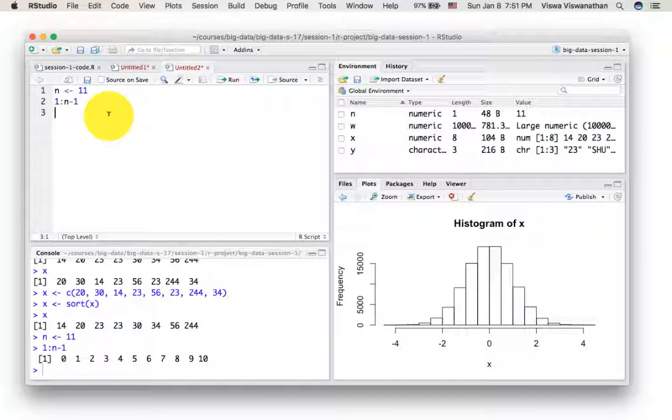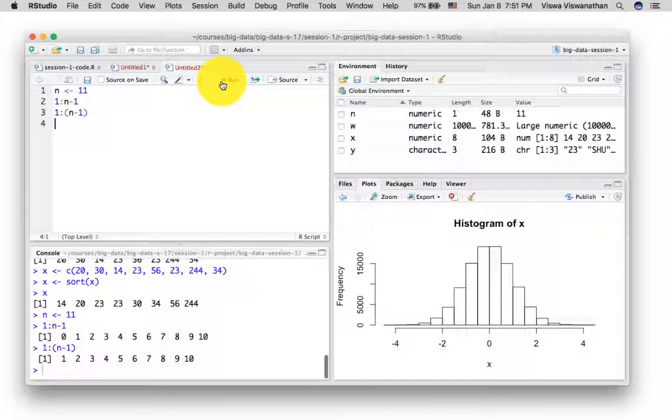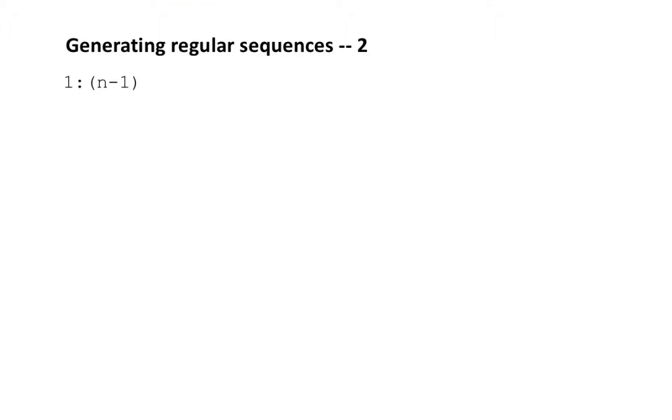So the way to achieve that is 1:(n-1). Because we want the minus 1 to be done first, we put it within parentheses. This is the age-old trick of using parentheses to affect the sequence of operations. If you did that, then you'll get 1 to 10 as we want.